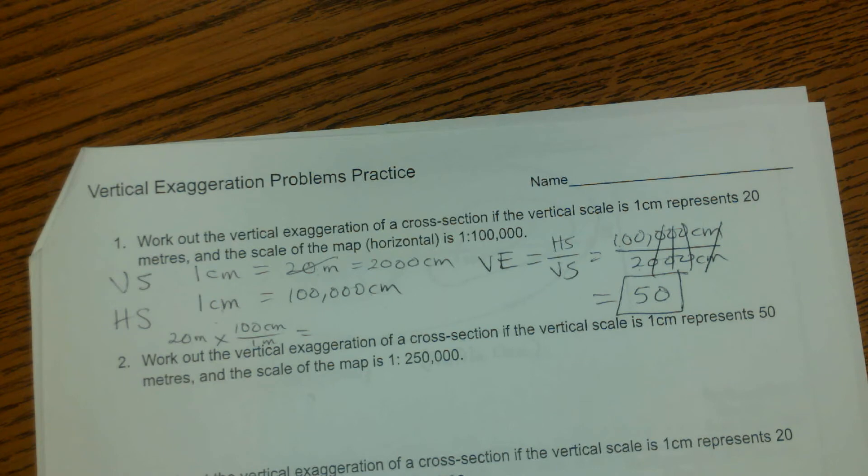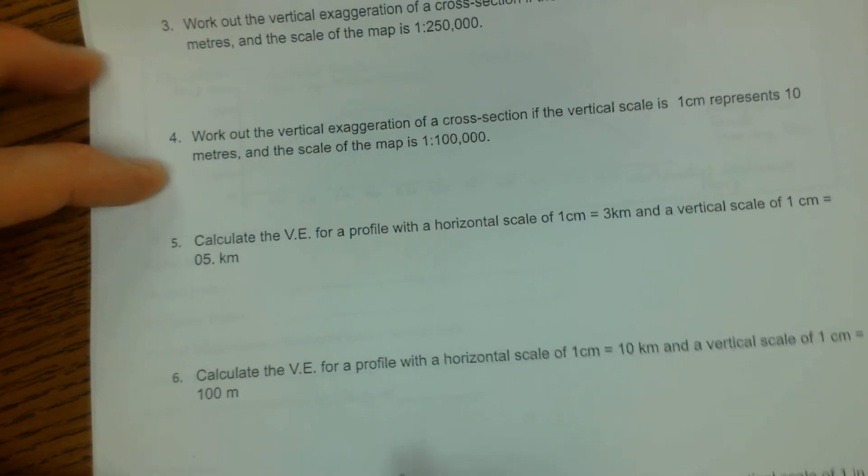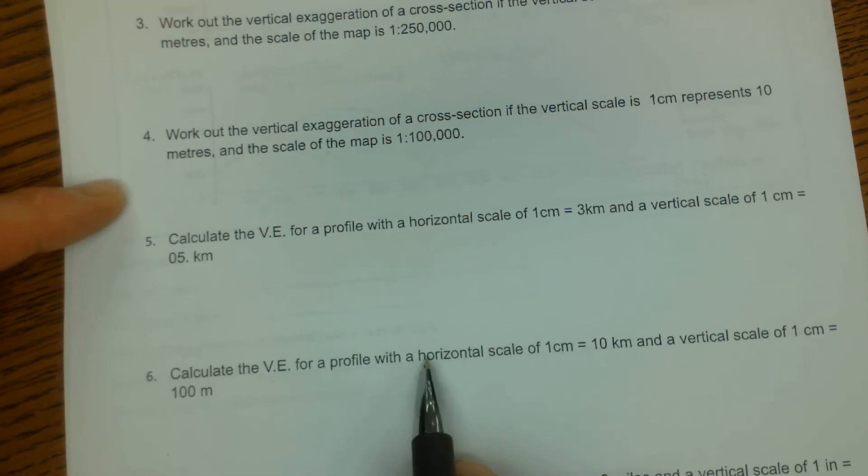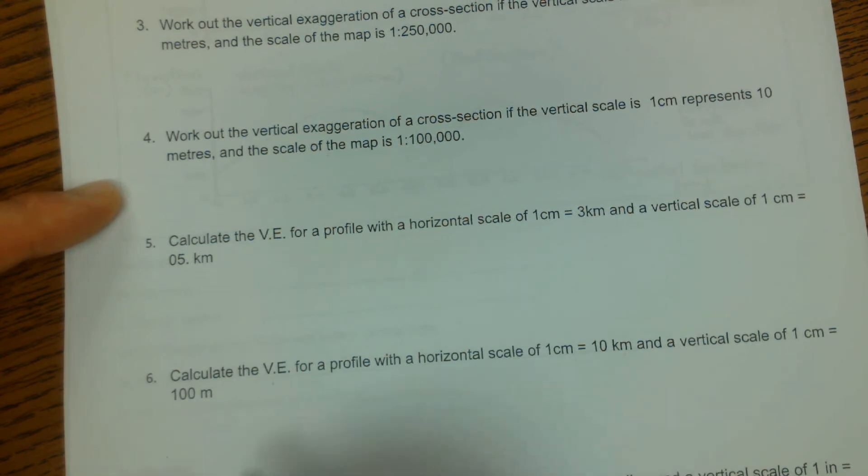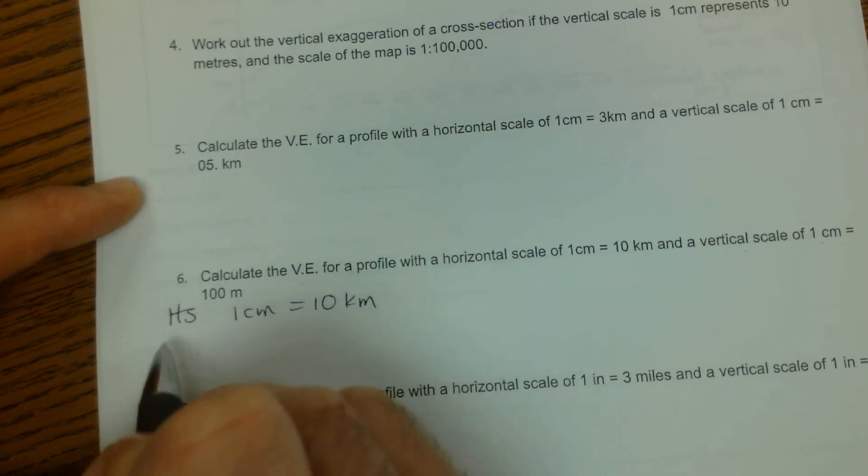So let's go ahead and do another example problem down below here. This one says calculate the vertical exaggeration, the VE, for a profile with a horizontal scale of 1 centimeter equals 10 kilometers. So my horizontal scale is 1 centimeter equals 10 kilometers.